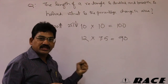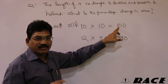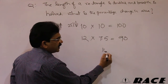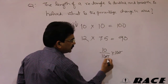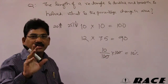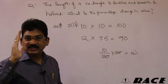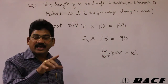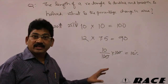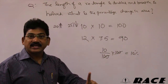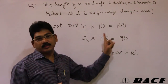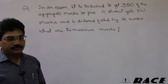Earlier area was 100, new area is 90, so the decrement is 10. Percentage change = 10/100 × 100 = 10 percent. The area decreased by 10 percent. Be careful with options — they may say 10% increased or 10% decreased. The correct answer here is 10 percent decreased.